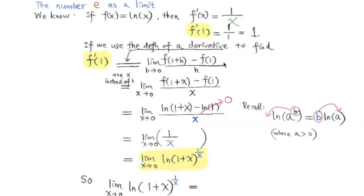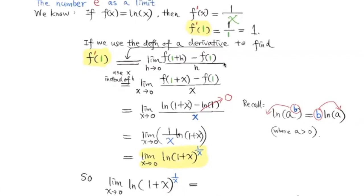Simplifying, we get 1 over x times ln of 1 plus x. Remember the properties of log functions. For this exponent b here, you can bring it in front of ln, providing that the base a here is positive.